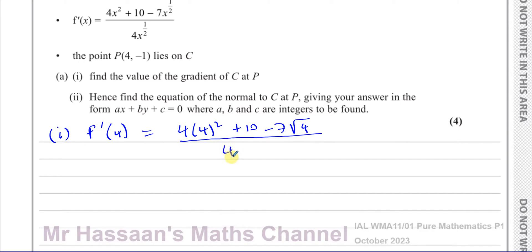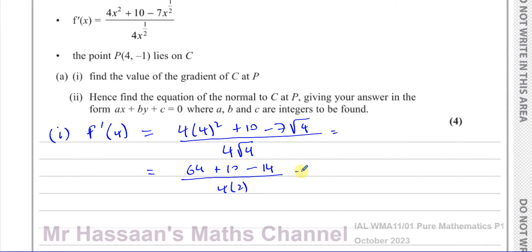That gives us: 4 times 16 is 64, plus 10, minus 7 times 2 which is 14, over 4 times 2 which is 8. So that's 64 minus 14, which is 50, plus 10, over 8 — giving 60 divided by 8. Simplifying, 4 goes into both: that's 15 over 2.